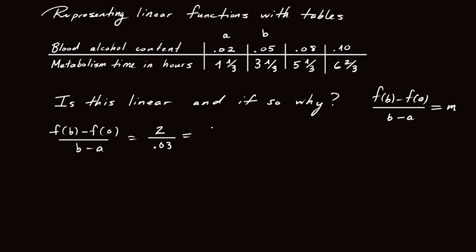Okay, how can I simplify that? Well, I can think of 0.03 as three one-hundredths. Then I can invert and multiply and get 200 divided by three. Okay, in other words, this is 66.6 repeating.